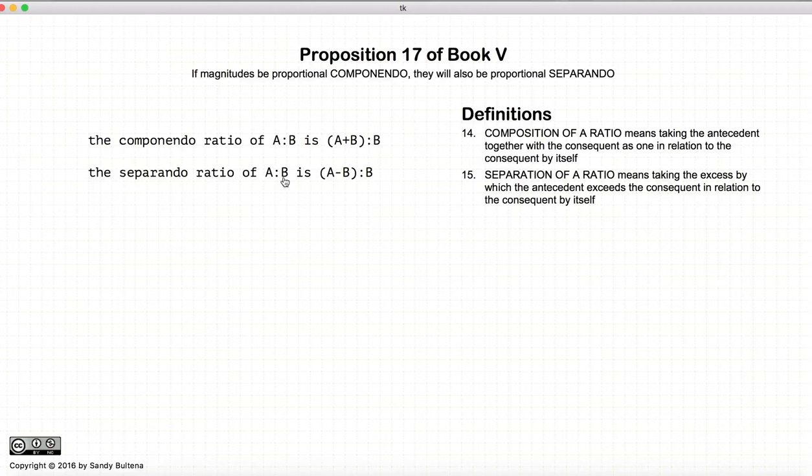The separando ratio of a to b, now we take the difference between a and b. So the separando ratio of a to b is a minus b compared to b. So this is the definition of the componendo ratio and the separando ratio.